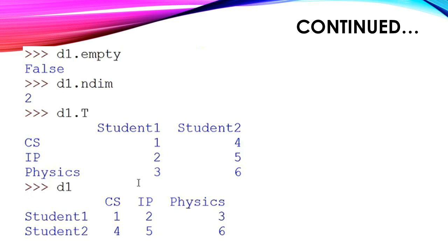The size attribute gives the number of elements in the data frame — here it is 6: d1.size gives 6. The shape attribute gives the dimensions: we have two rows and three columns, so d1.shape gives (2, 3). The values attribute gives the array of values inserted: d1.values returns an array of two rows and three columns. The empty attribute: d1.empty returns False, meaning the data frame is not empty. The ndim attribute returns 2, since we are using a two-dimensional array.